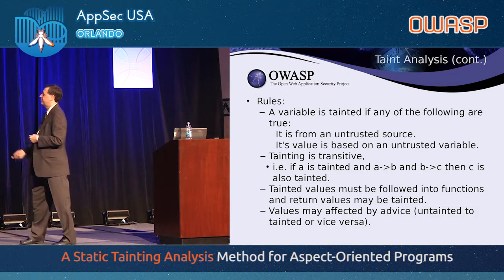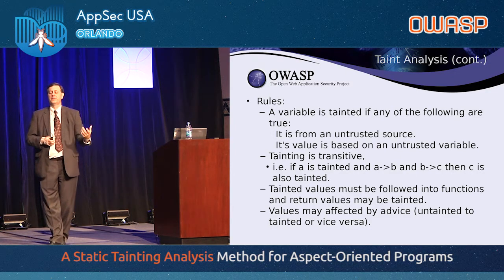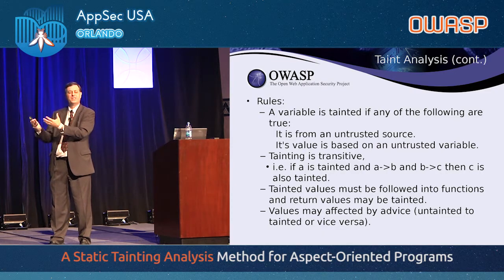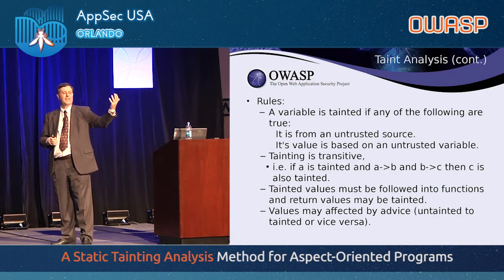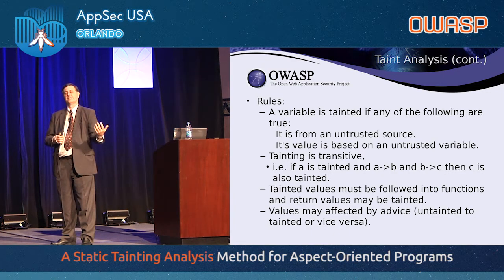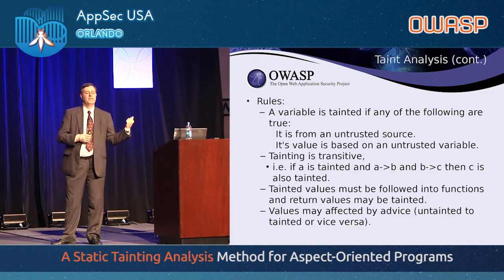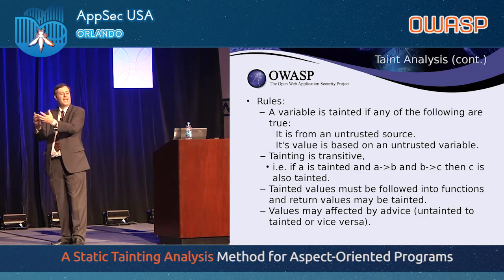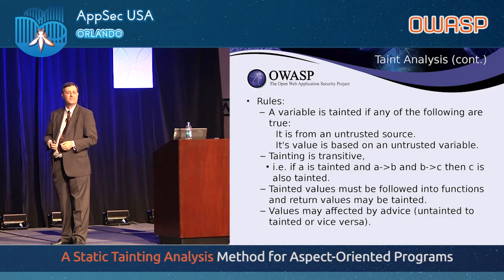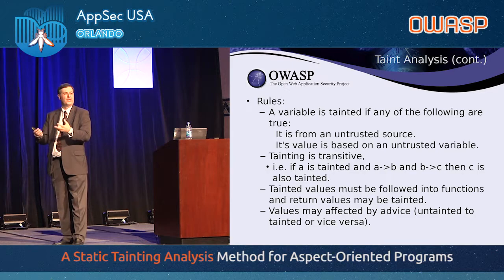There are a few rules for taint analysis. A variable is tainted if it comes from an untrusted source, or if it is assigned a value based on another untrusted variable. It is transitive — if A is tainted, gets assigned to B, B gets assigned to C, then C is also tainted. You have to follow it all the way along. If you are passing tainted values as parameters into functions, that tainted status has to follow into the called function, and any return values may also be tainted based on calculations inside that function.